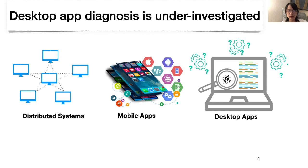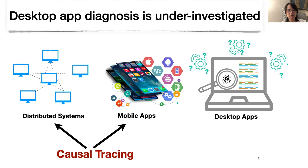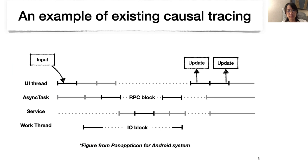One promising technique to tackle this complex multi-component diagnosis problem is causal tracing. The community has extensively looked into causal tracing in distributed systems and mobile apps, but there is not much attention on desktop application diagnosis. So we decided to investigate this important problem and try to apply causal tracing to desktop apps.